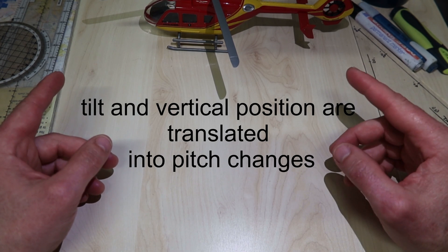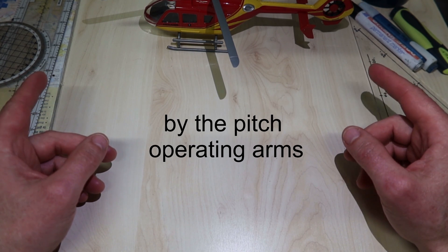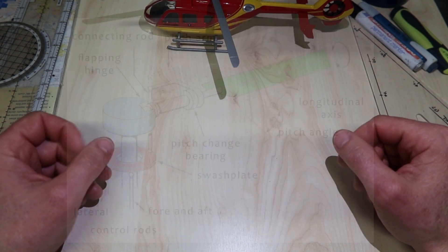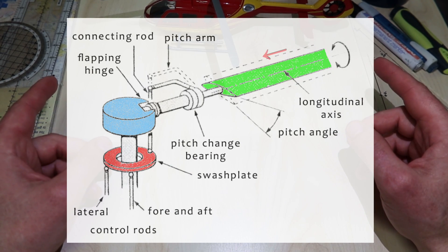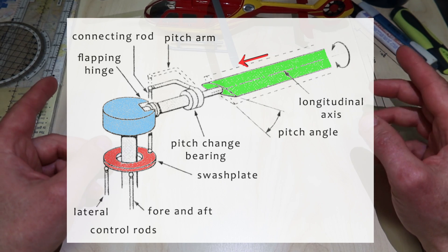Tilt and vertical position are translated into pitch changes by the pitch operating arms operating through pitch control horns. The pitch control horns, attached at the root of the blades, provide the leverage required to change blade pitch.